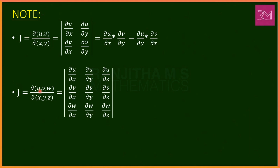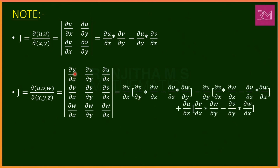Similarly, the Jacobian for three functions u, v, w with respect to x, y, z is the 3×3 determinant expanded as: del u/del x into (del v/del y · del w/del z − del v/del z · del w/del y) minus del u/del y into (del v/del x · del w/del z − del v/del z · del w/del x) plus del u/del z into (del v/del x · del w/del y − del v/del y · del w/del x). This is the standard form to expand a 3×3 determinant.